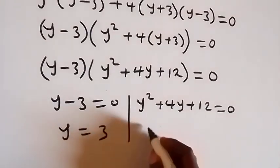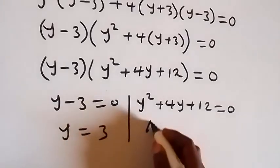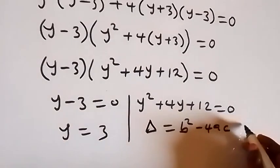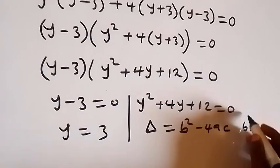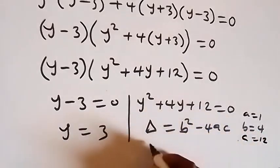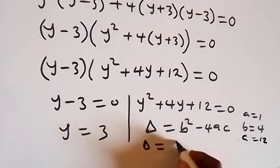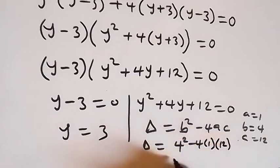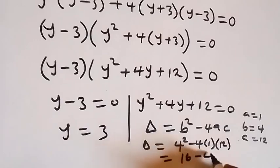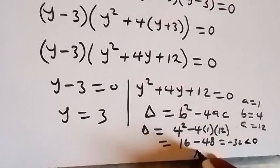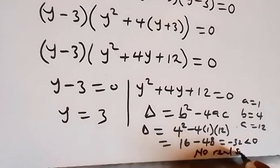From here, let's check if we have a real solution using the discriminant: b squared minus 4ac, where b equals to 4, a equals to 1, and c equals to 12. When we substitute, discriminant equals 4 squared minus 4 times 1 times 12, which gives us 16 minus 48, which gives us minus 32, and that is less than 0. So when the discriminant is less than 0, it means no real solution for this side.